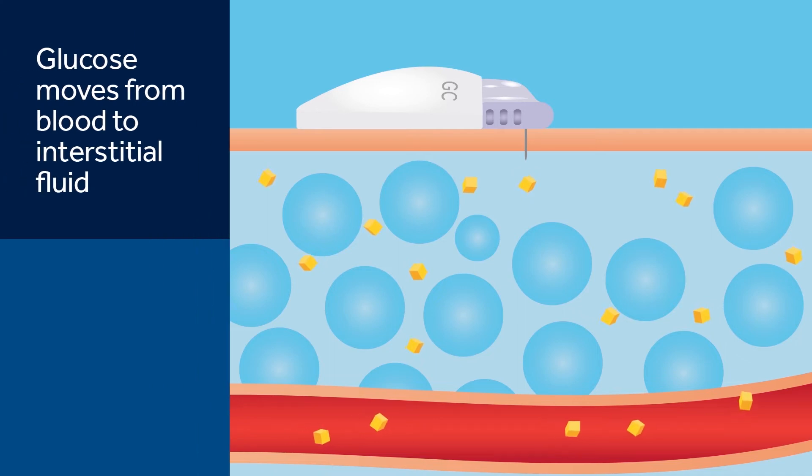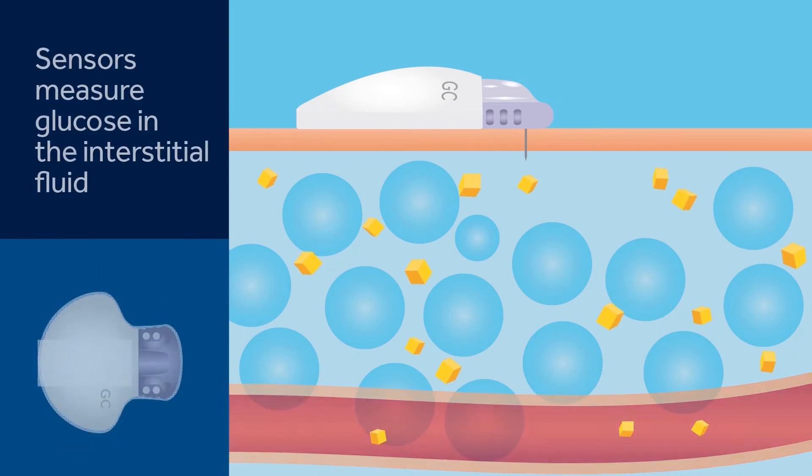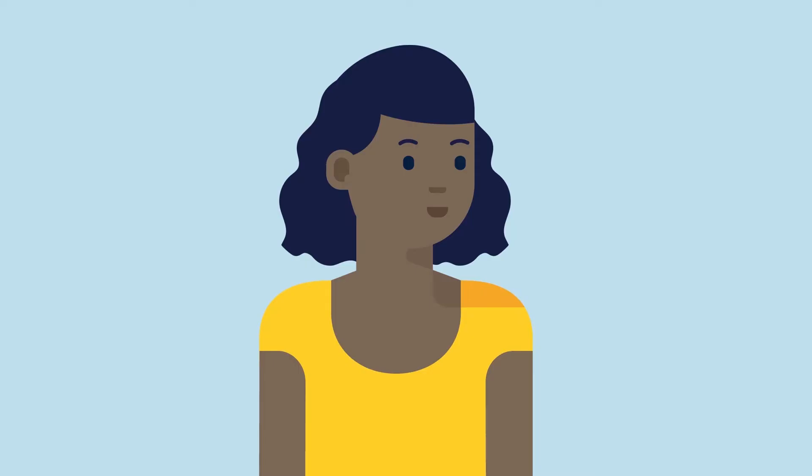Glucose is always moving between the blood and interstitial fluid. BG meters measure glucose levels in the blood, and sensors measure glucose levels in the interstitial fluid. This is why meter readings and glucose readings from your sensor will rarely be exactly the same. This difference between BG and SG is okay and should be expected.